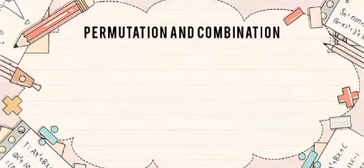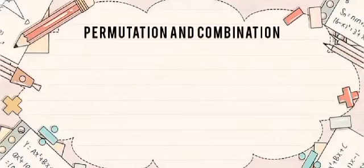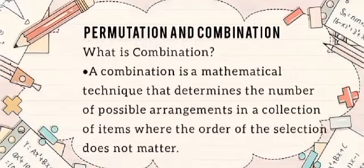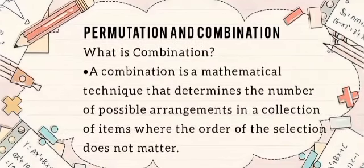Permutation and Combination. A permutation is a mathematical technique that determines the number of possible arrangements in a set when the order of the arrangement matters. A combination is a mathematical technique that determines the number of possible arrangements in a collection of items where the order of the selection does not matter.